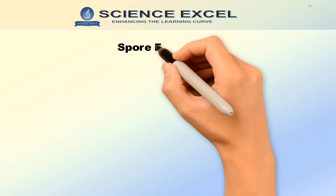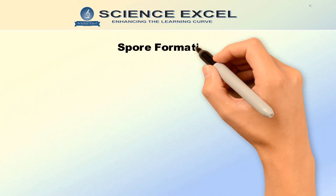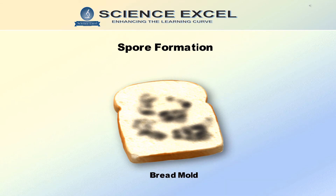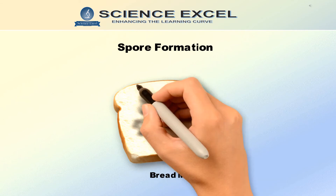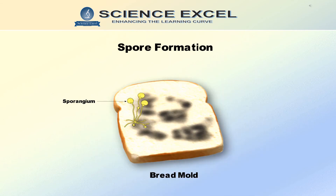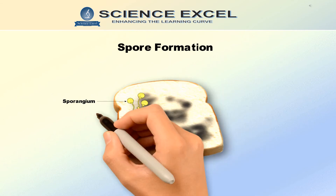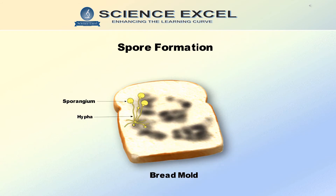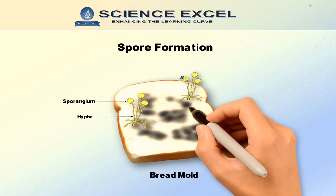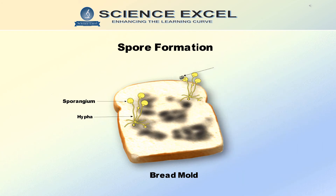We have a classic example of spore formation in bread mold or rhizopus. The sporangia present at the top of the thread-like structures called hyphae have sacs filled with spores. When these sporangia burst, spores get scattered in the air. Under suitable conditions, these spores develop into a new plant.